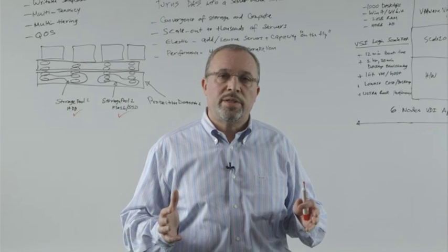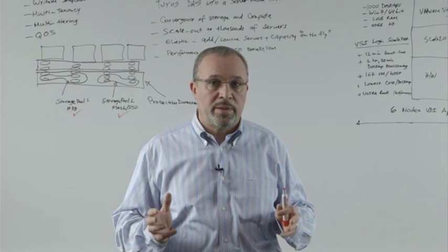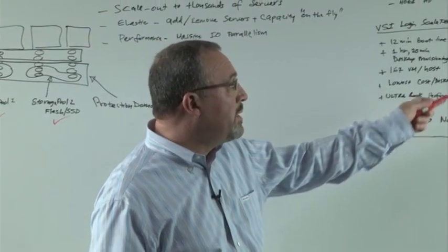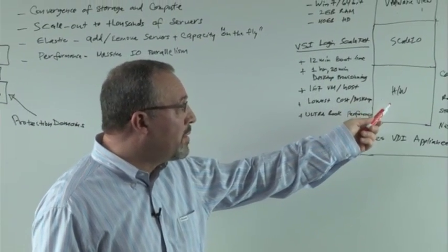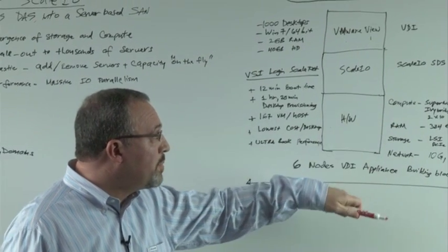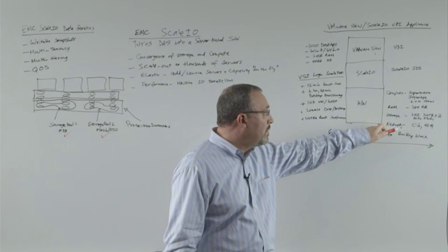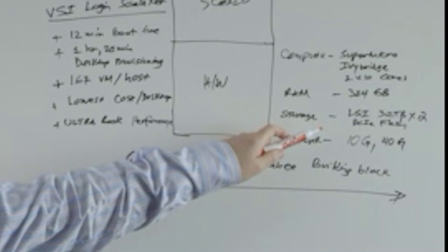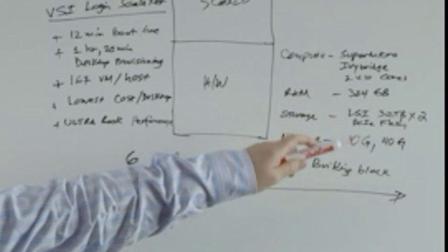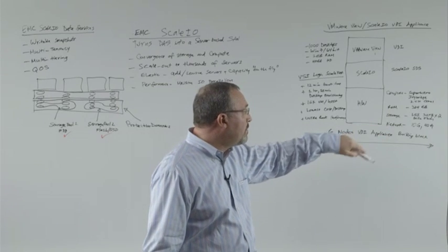The SCALE.IO converged infrastructure appliance for VDI is based on three separate components. The first one is the compute from Supermicro, commodity hardware using Ivy Bridge processors, 384 GB of RAM, and storage from LSI VDI using 3.2 TB PCI flash cards, as well as 10 GB and 40 GB networking.